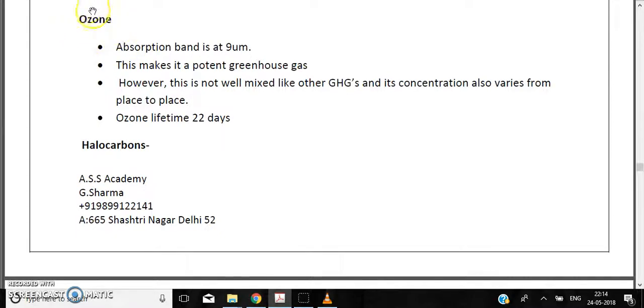Ozone is another greenhouse gas. Its absorption band is at 9 micrometers. Ozone absorbs at 9 micrometers, and this band makes it a potent greenhouse gas.